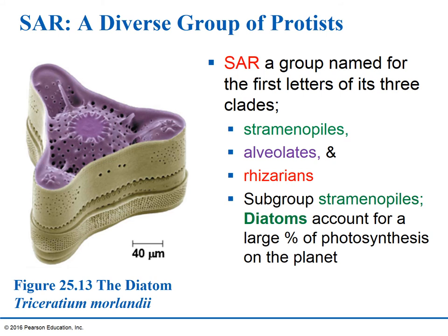The next supergroup is SAR. Remember that it's really three groups: the S stands for stramenopiles, the second is alveolates, and the third is rhizarians. We'll do a quick run through of this large group.